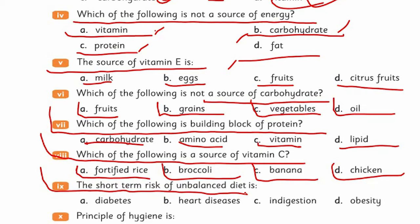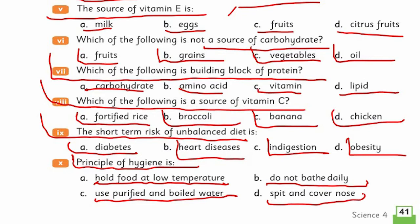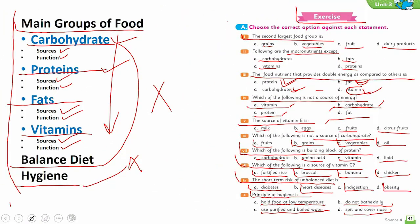The short term risk of unbalanced diet - you'll see diabetes, heart disease, indigestion, or obesity among them. The tenth one: principle of hygiene is hold food at low temperature, use purified and boiled water, do not bath daily, or spit and cover nose? Which are principles of hygiene?